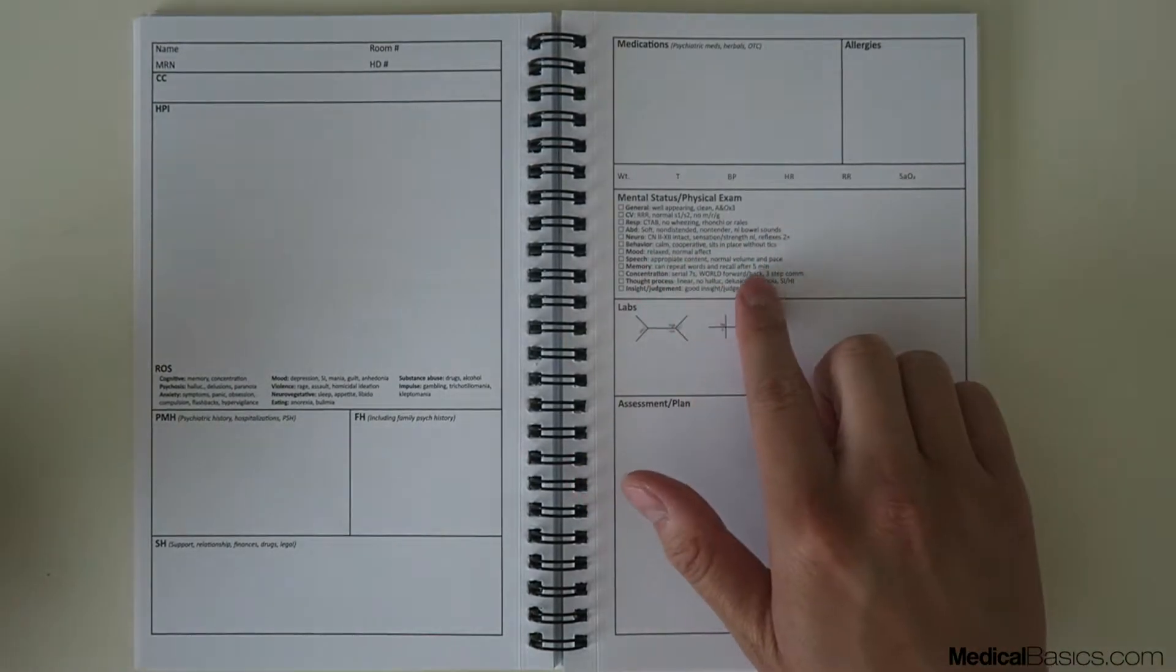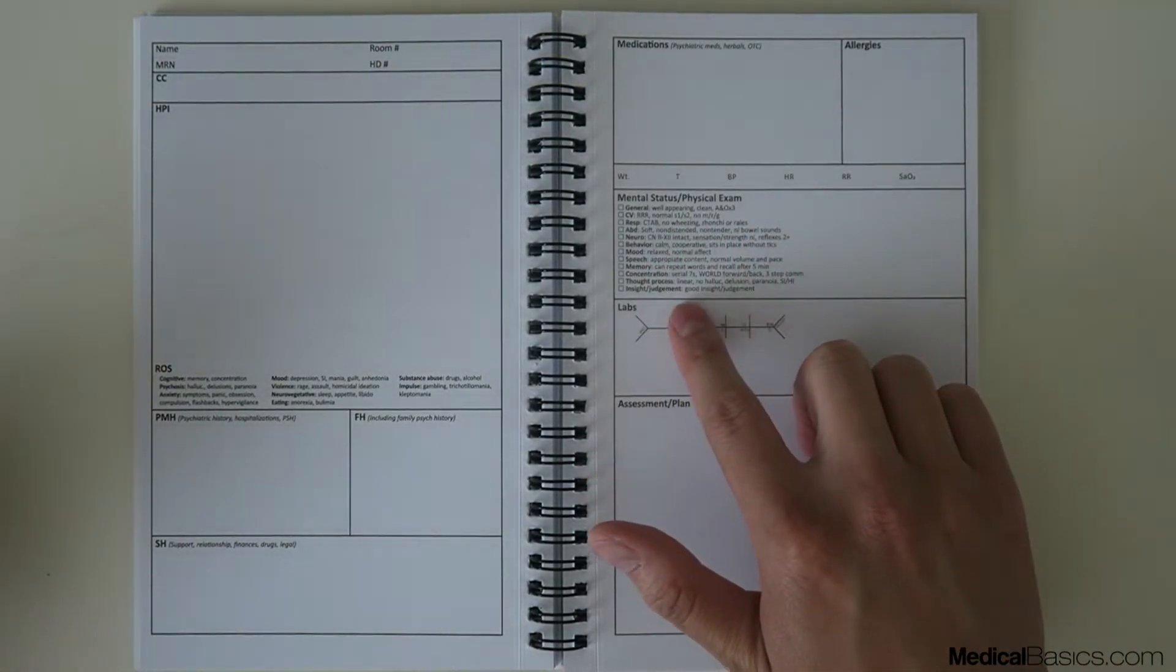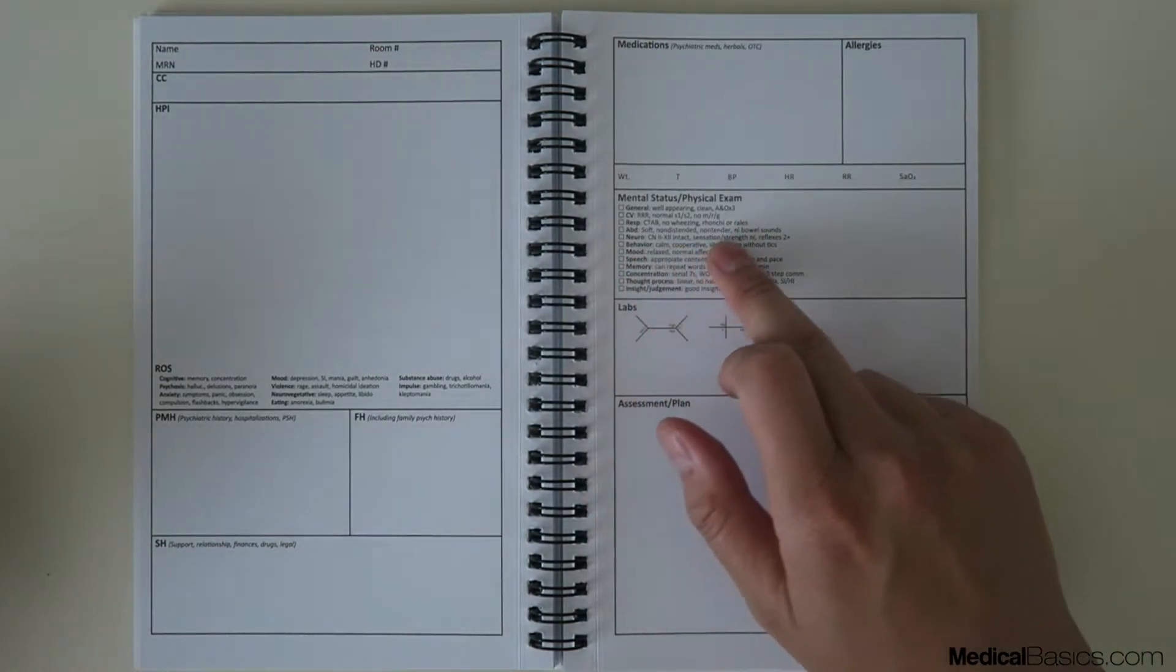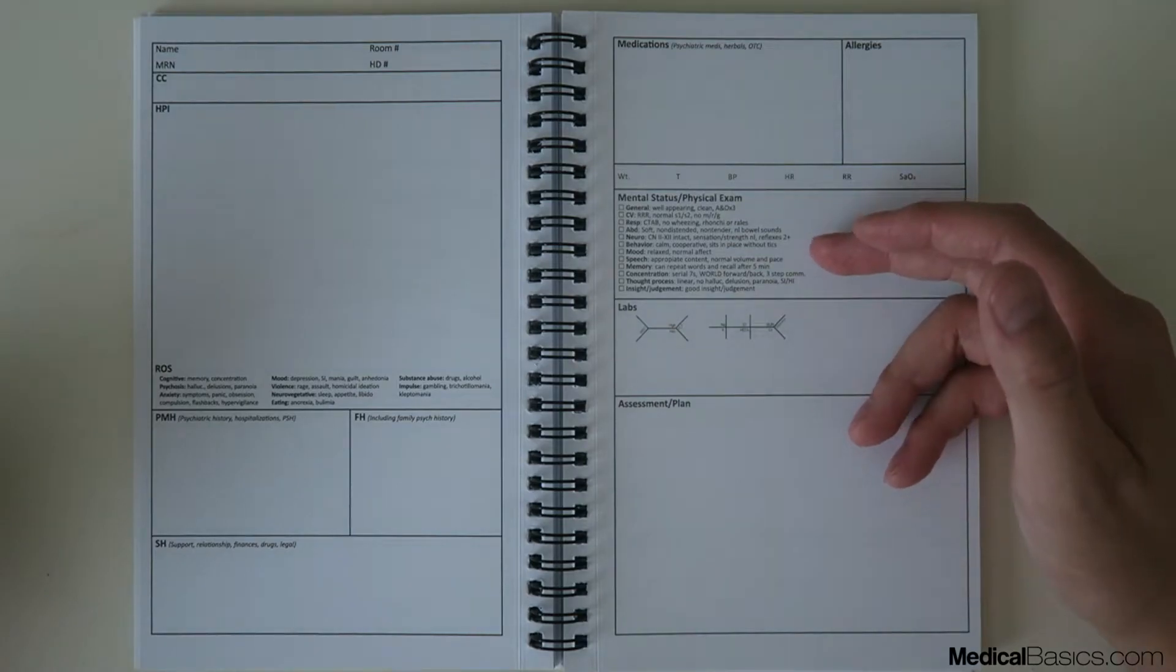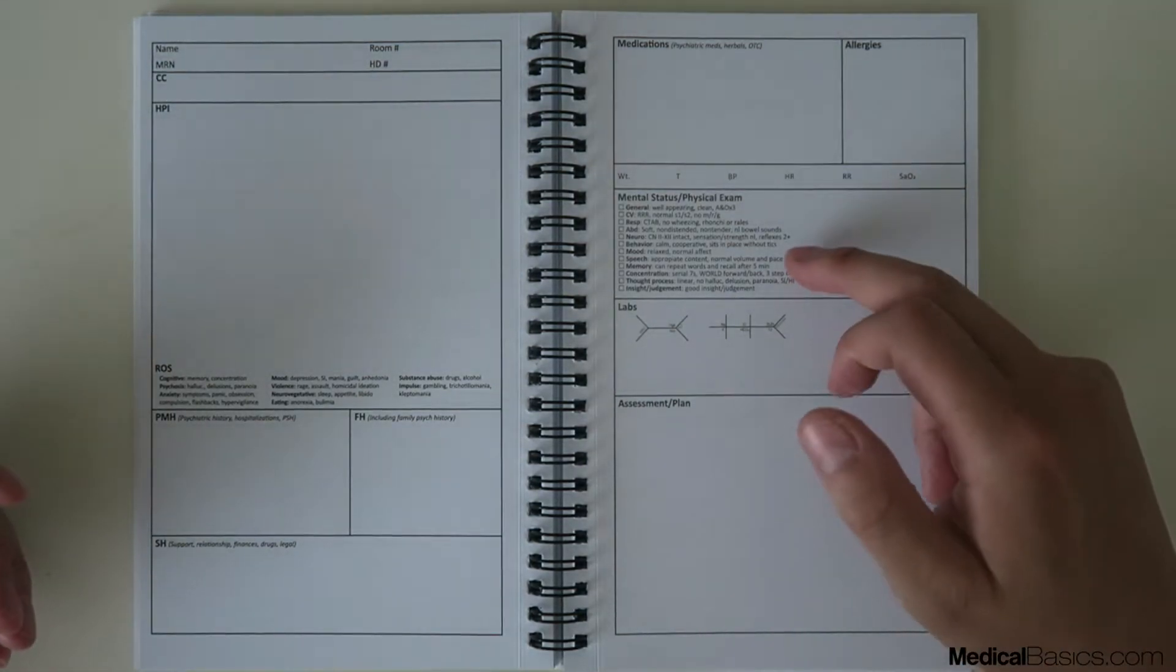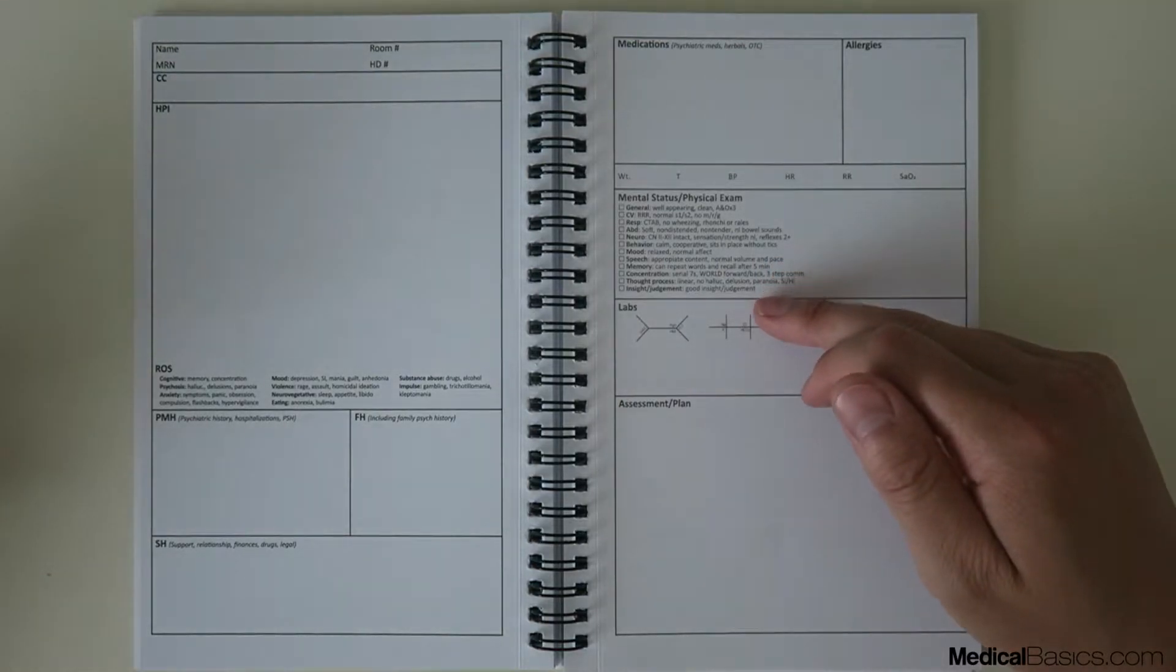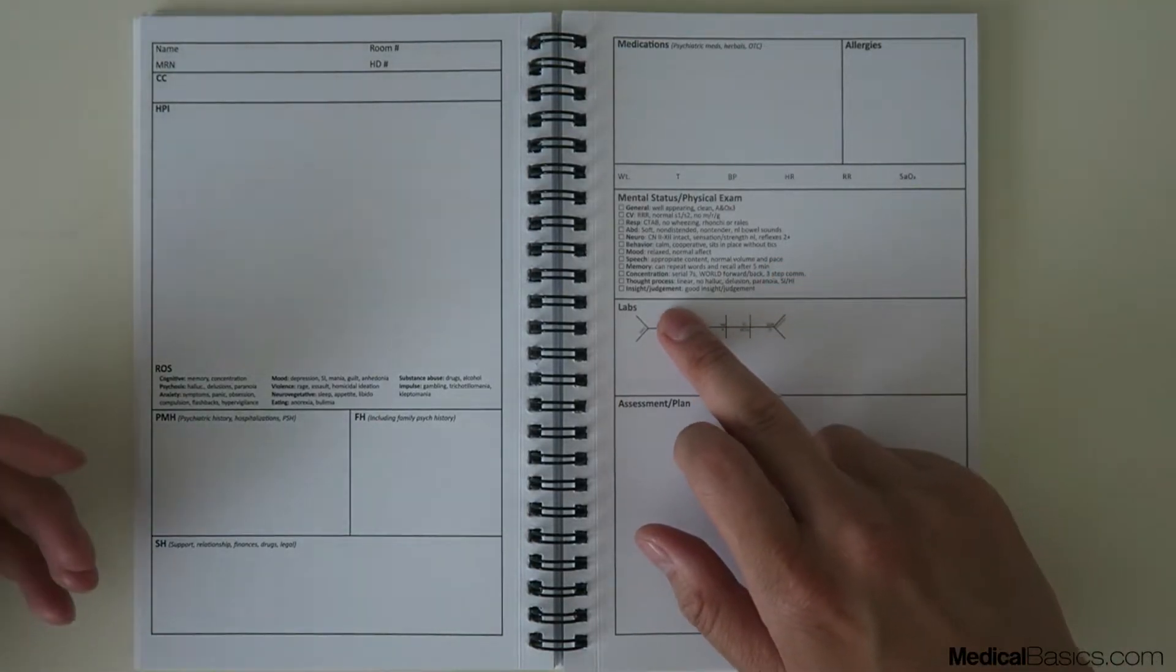It's also going to have an added benefit of the mental status and physical exam. Unlike our other exams which stop right here after neuro, we're going to have other portions that give you almost like a mini mental status exam: behavior, mood, speech, memory, concentration, thought process, insight, and judgment.